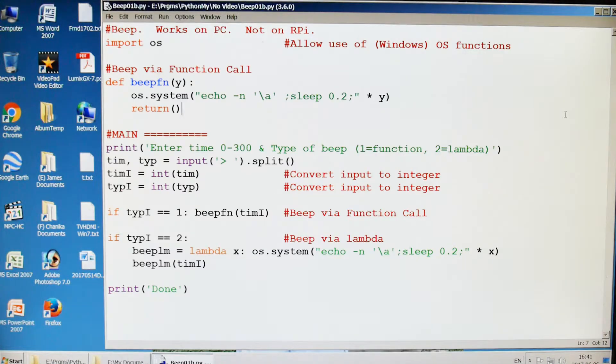I've been doing some research on how to make my computer beep from a Python program and it hasn't been easy. I've done a lot of research, a lot of things don't work, but let's get into this. I just call this beep. It works on a PC but it does not work on the Raspberry Pi yet.